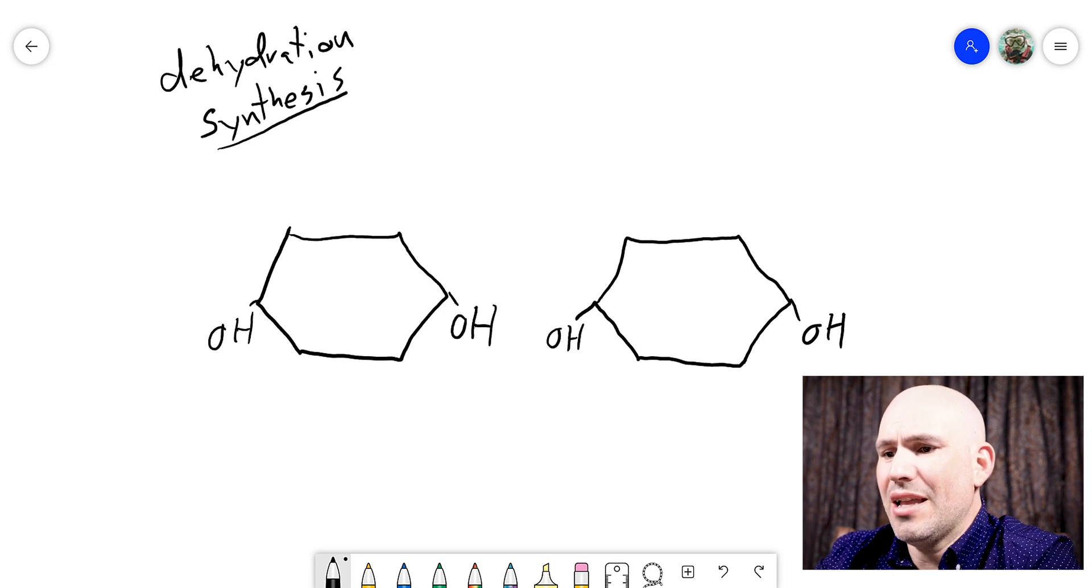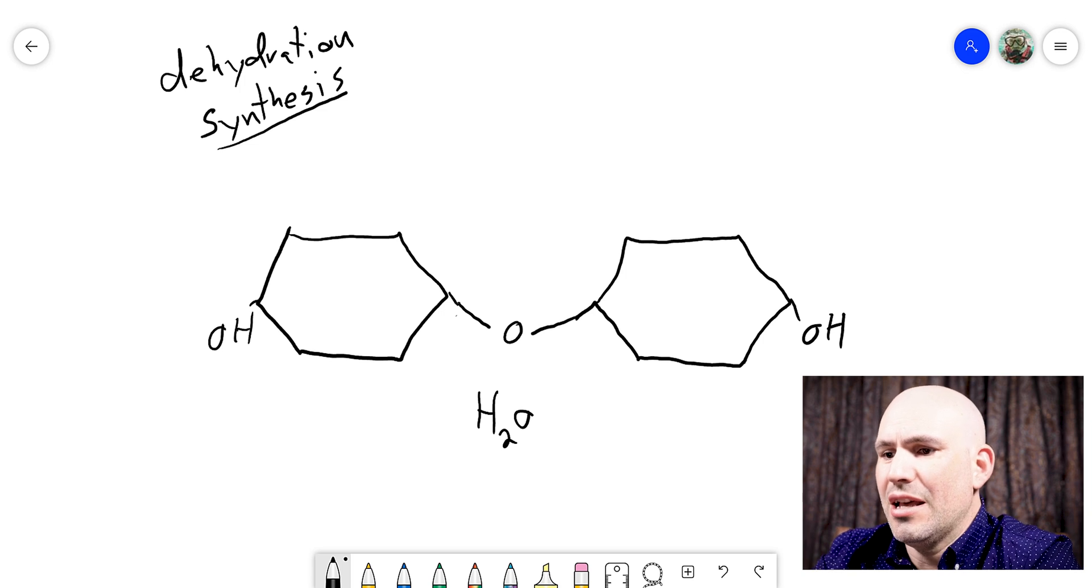And the way that that's going to happen is by connecting these two hydroxides. The way that you can do that is by removing H2O, which is a molecule of water. And so if I get rid of an H and an O and another H, that leaves us an oxygen that they can form a bond around. And so by removing water, we were able to connect these two monomers together. So dehydration synthesis is how we form large biological molecules by removing water.